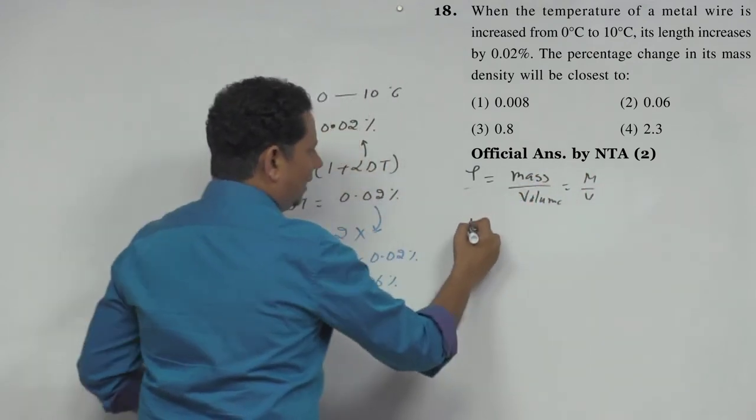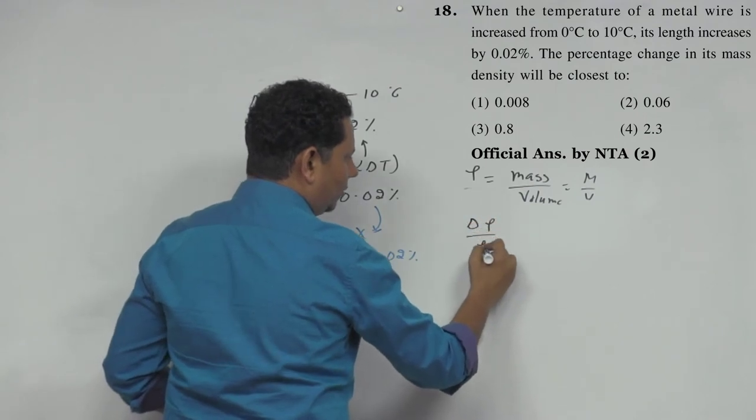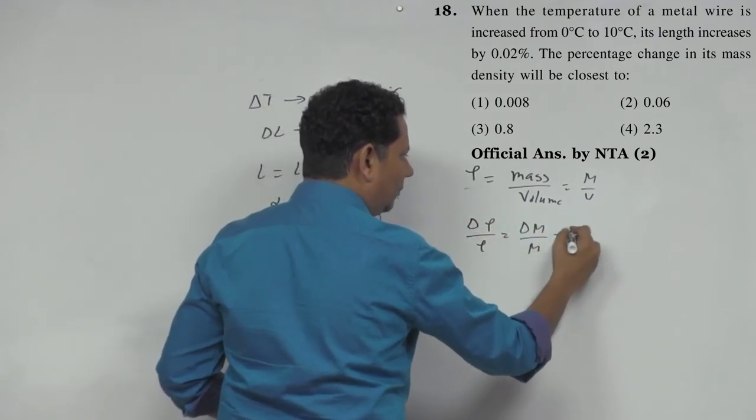Now if we see delta rho by rho, that's delta M divided by M plus delta V divided by V.